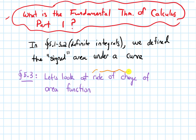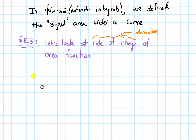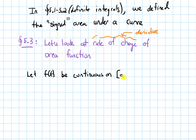Recall that the rate of change is just the derivative, so we want to talk about the derivative of this area function. To start, I'm going to let f of t be a continuous function on some closed interval from a to b, and I'm going to assume that f of t is always greater than or equal to 0, just for simplicity — it'll make it easier to draw a picture.